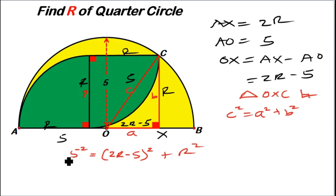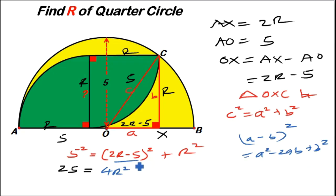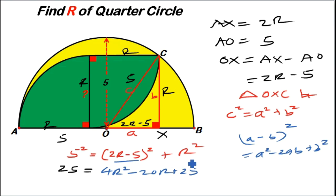Expanding: 5 squared is 25. Then (2r minus 5) squared uses the identity (A minus B) squared equals A squared minus 2AB plus B squared. So A squared is (2r) squared which is 4r squared, minus 2 times 2r times 5 which is minus 20r, then plus 5 squared which is plus 25. Then we add the r squared term, giving us 25 equals 4r squared minus 20r plus 25 plus r squared.